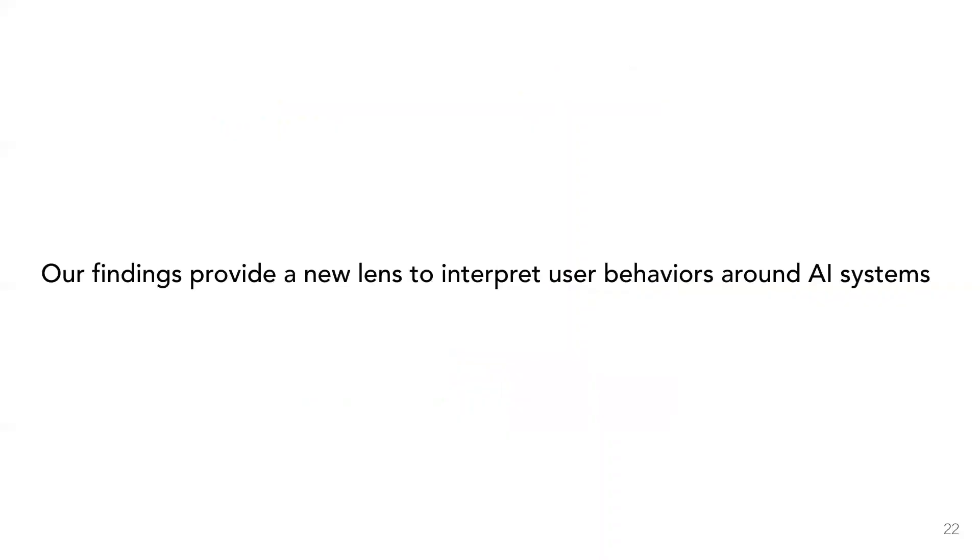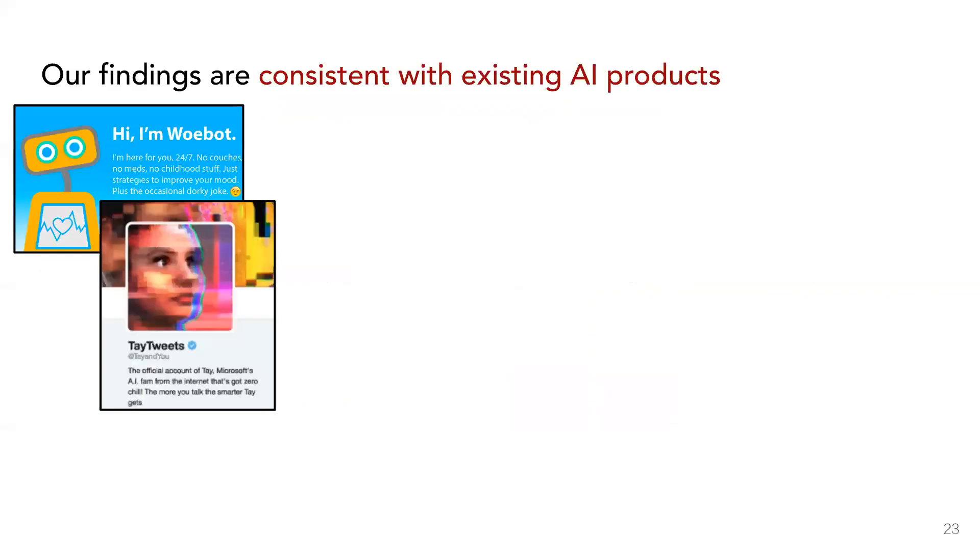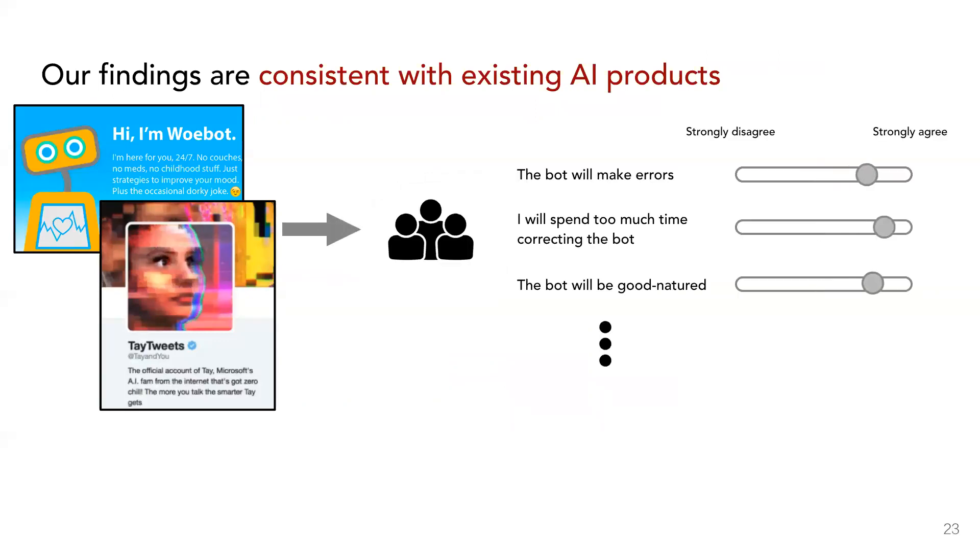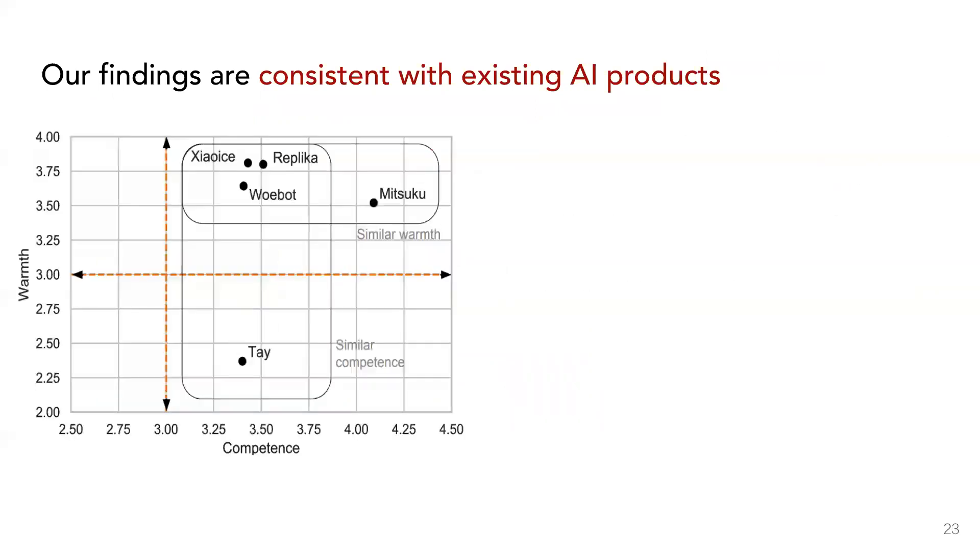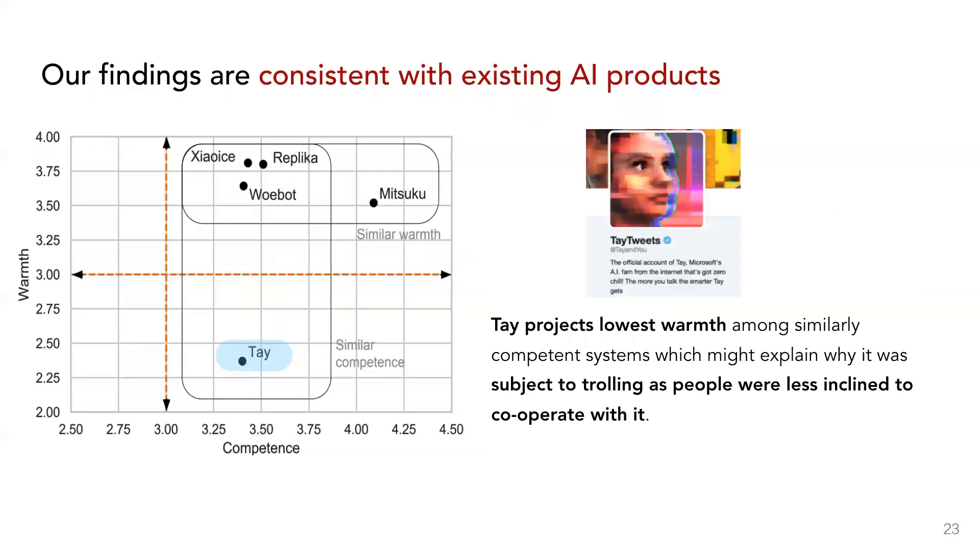Our findings provide a new lens to interpret user behaviors around existing AI systems. We take metaphors attached to existing systems and use the same method as before to gather judgments of warmth and competence. We project these existing systems into the warmth and competence space and find that all systems project high competence, which might explain why people are constantly dissatisfied with them. We find that Tay projects the lowest warmth, which might explain why it elicited the antisocial interactions that it did.